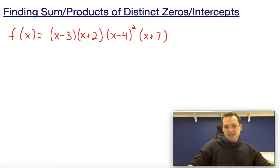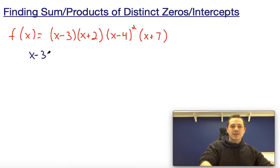And let's say the question was asking us to find the sum of the distinct zeros or intercepts. Well, the way that we find the zeros is we take each of these factors and we set them equal to zero. So setting x minus 3 equal to zero, we would find x equals 3. Setting x plus 2 equal to zero, we would find x equals negative 2.